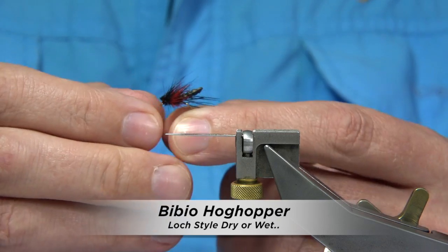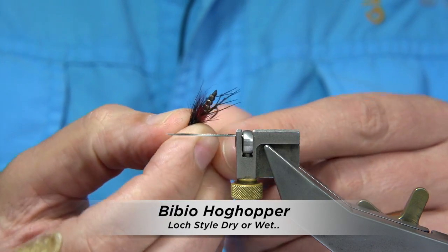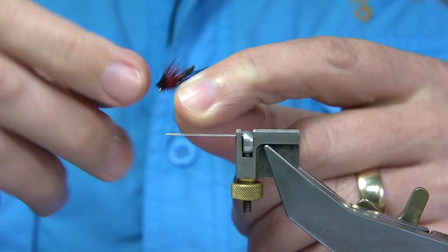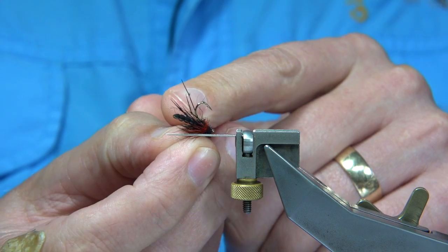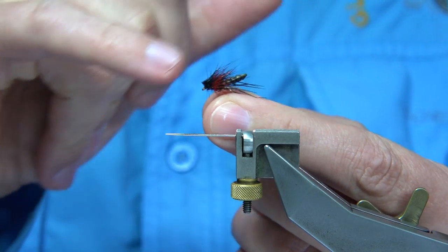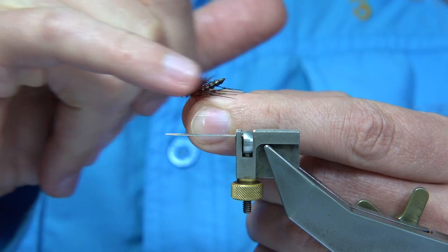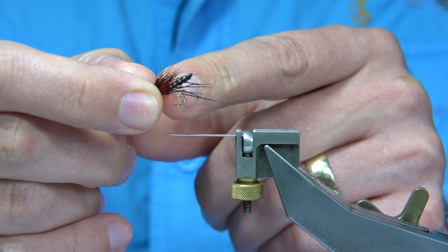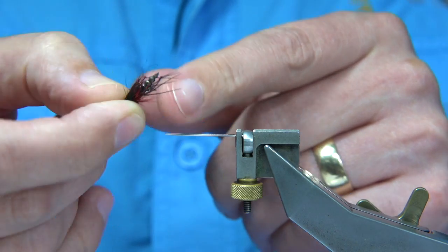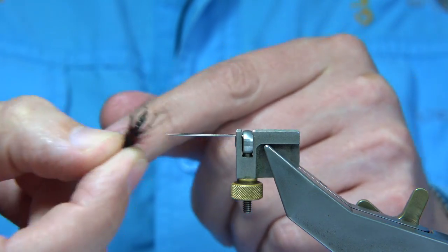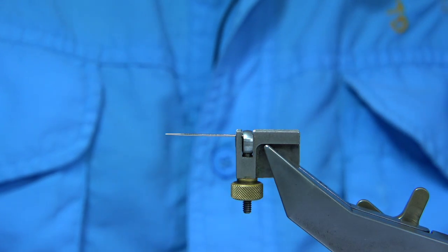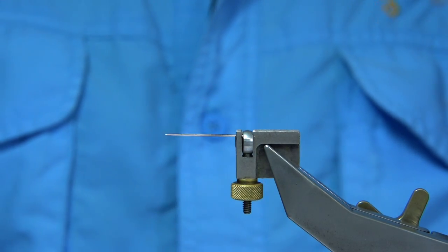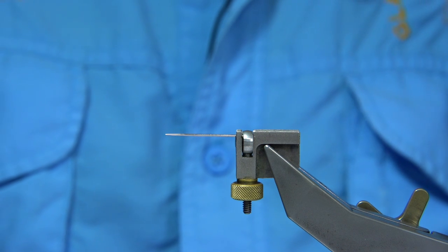I've been tying a few hedgehog patterns, and this is what I call the Hog Hopper because it's basically a hopper pattern. In this case, it's a detached body version with the hedgehog pattern in front. This is tied on a short shank special, which is a wide gape medium wire hook. The tie is a size 12, and the body of the hook is equivalent to a size 14. Before we do that, we've got to form the body.